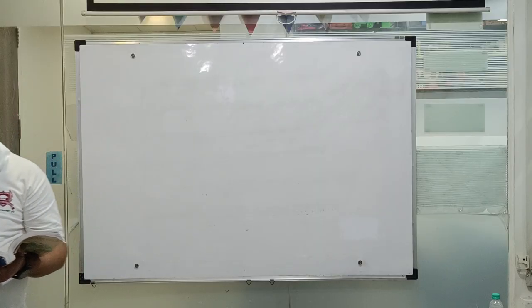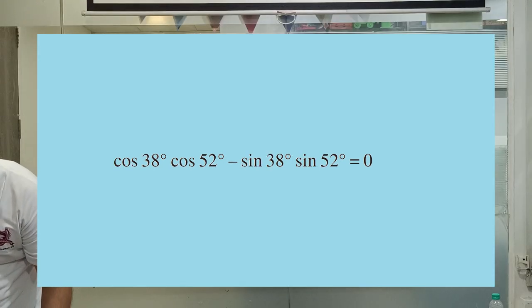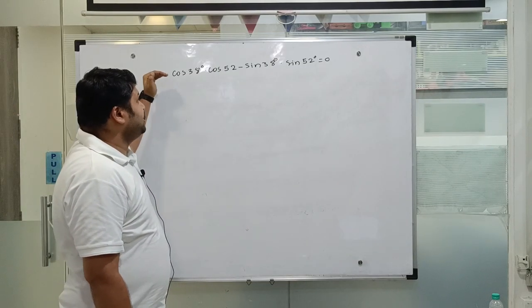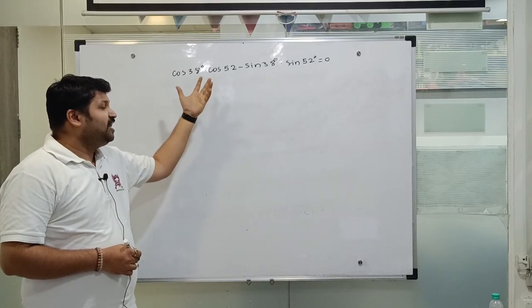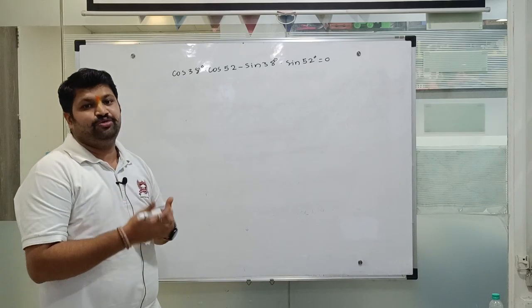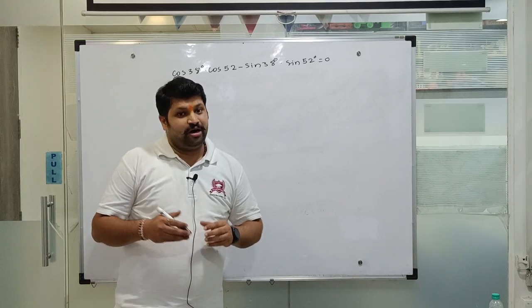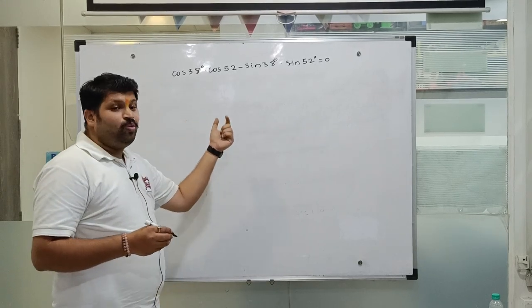Let us consider this example: cos 38° × cos 52° − sin 38° × sin 52° = 0. This is a very interesting example because the angles are given but their values are not easy to find. The angles 38 and 52 are slightly complicated — we would normally need tables or calculators. However, this sum can be solved without using trigonometric tables or calculators.